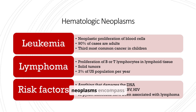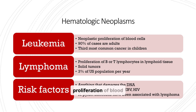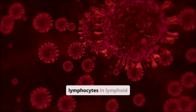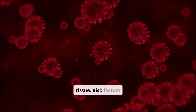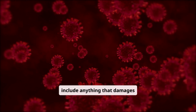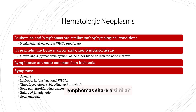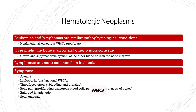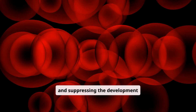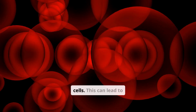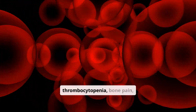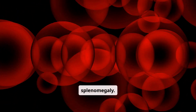Hematologic neoplasms encompass conditions like leukemia and lymphoma. Leukemia involves the proliferation of blood cells, while lymphoma involves the proliferation of lymphocytes in lymphoid tissue. Risk factors include anything that damages DNA and certain viral infections. Non-functional cancerous WBCs proliferate, overwhelming the bone marrow and suppressing the development of other blood cells. This can lead to anemia, leukopenia, thrombocytopenia, bone pain, enlarged lymph nodes, and splenomegaly.